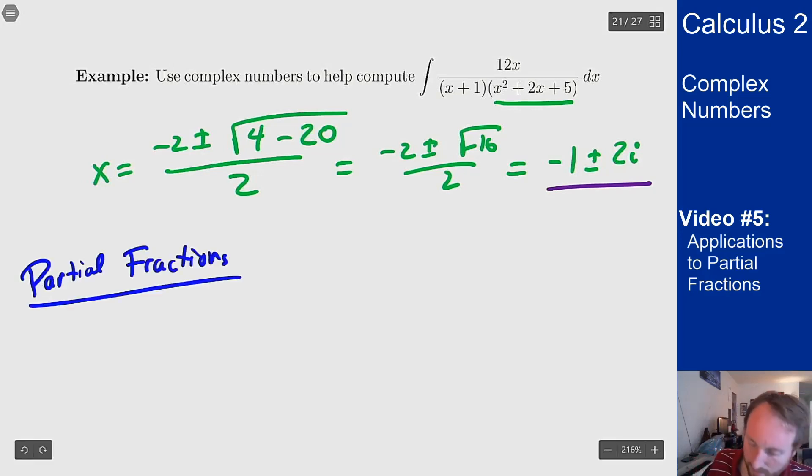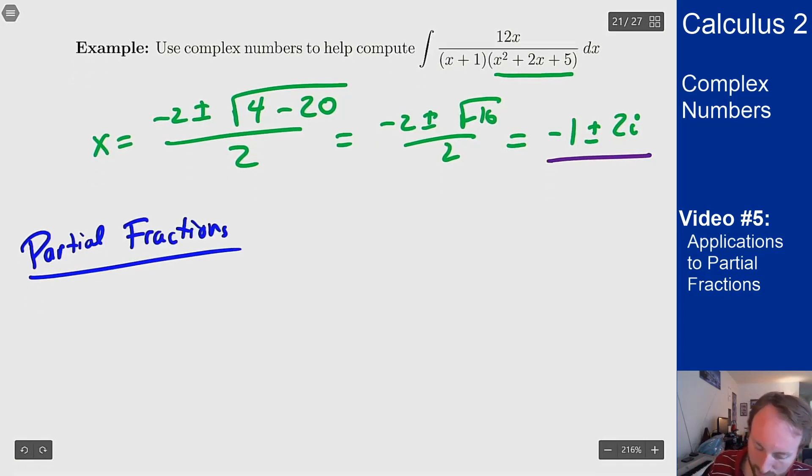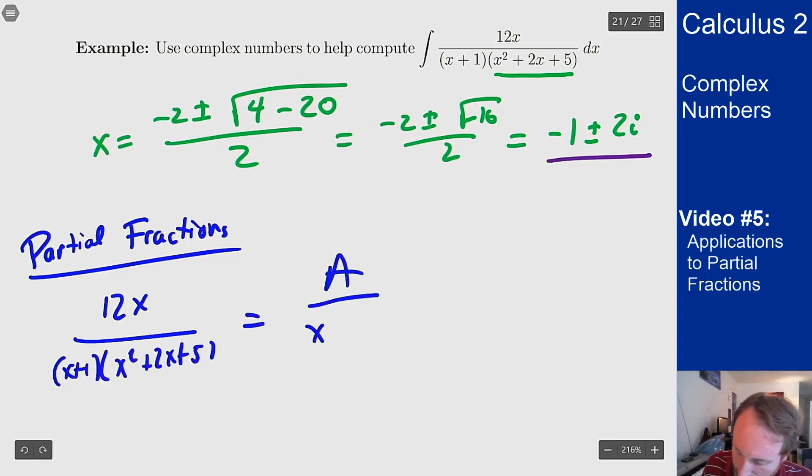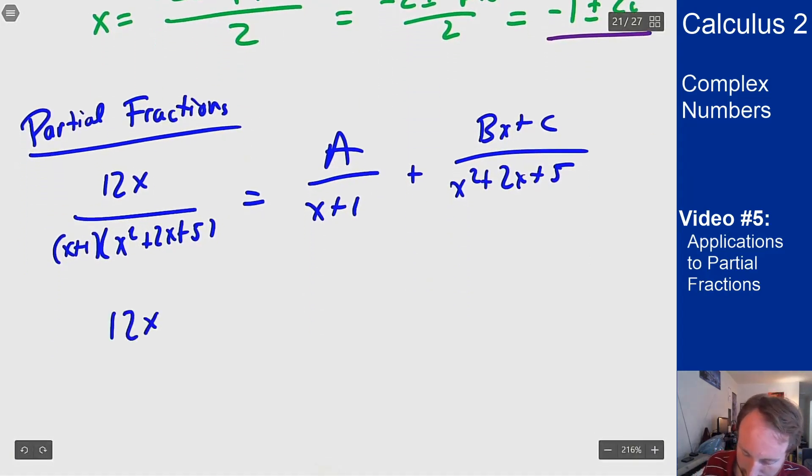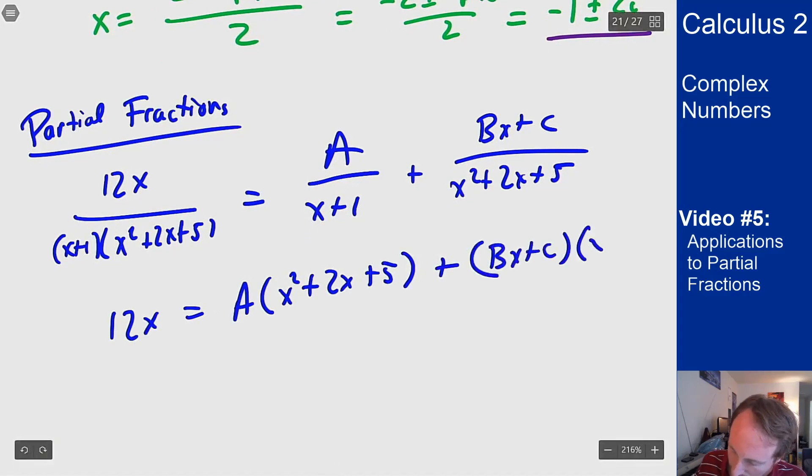If you want to do partial fractions what do I get? Well I get that I will have 12x over (x+1)(x²+2x+5) equals A/(x+1) plus (Bx+C)/(x²+2x+5) meaning that 12x equals A(x²+2x+5) + (Bx+C)(x+1). Now I need to solve for these constants.